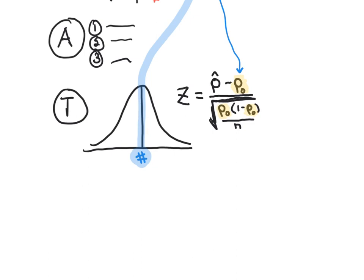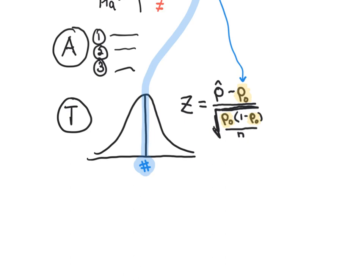The T part of PHANTOMS means: draw the curve, shade the curve, show the Z score. In the calculator, you're going to find the one-prop Z test — that's literally what you use for that entire section. You steal all the values from the one-prop Z test in your calculator.